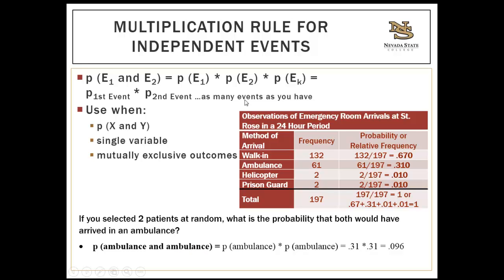When looking at a single variable with outcomes that cannot overlap and the word 'and' is involved, you're probably looking at the multiplication rule for independent events. You simply multiply the probability of each event of interest. For example, if you selected two patients at random, what is the probability that both would have arrived in an ambulance? The probability of arriving in an ambulance is 0.31, so 0.31 times 0.31 gives our probability.